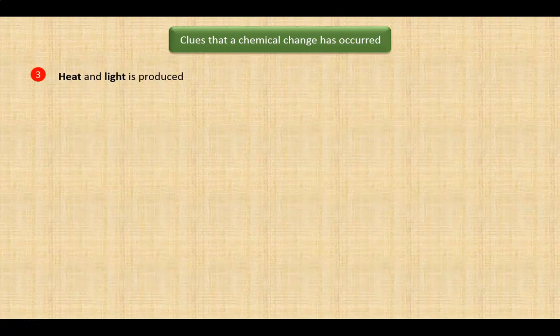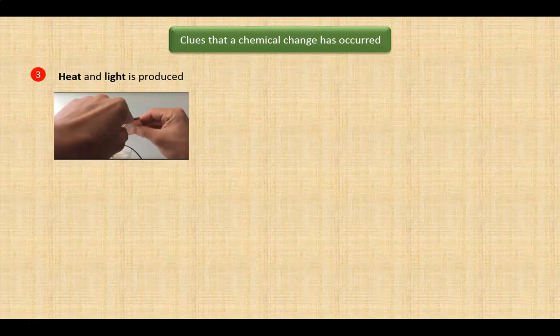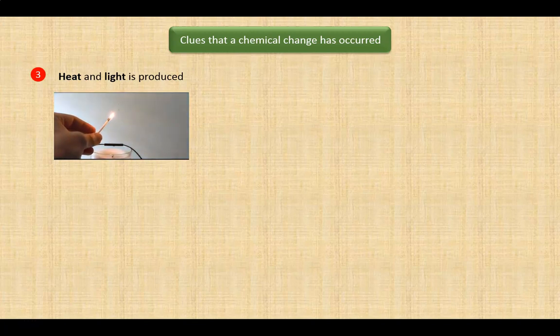Clue number three concerns whether heat and light are produced. First, in the case of a burning match, it is clear that heat and light are produced along with new substances like carbon dioxide, water and ash. And therefore, it is evident that a chemical change is occurring.